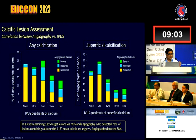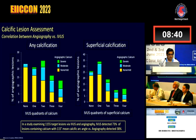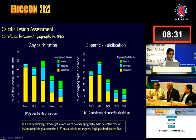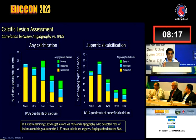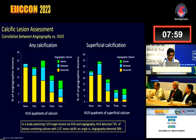In these lesions, calcium is very ubiquitous — it is present in most coronary lesions. The study examined 1,155 native coronary artery target lesions by both IVUS and angiography. IVUS detected calcium in 73% of lesions, whereas angiography detected it in only 38%. IVUS is therefore a much more sensitive imaging modality when looking at calcium.